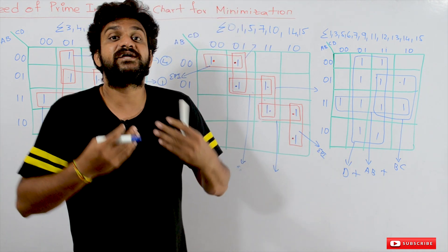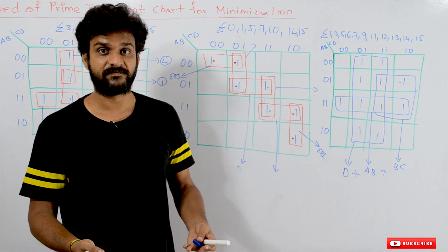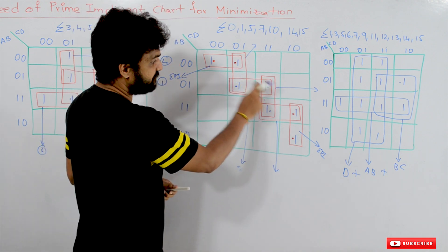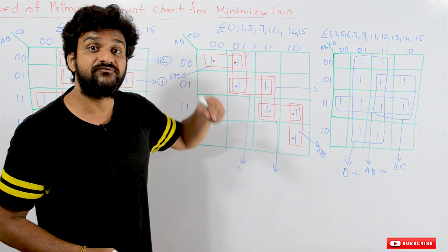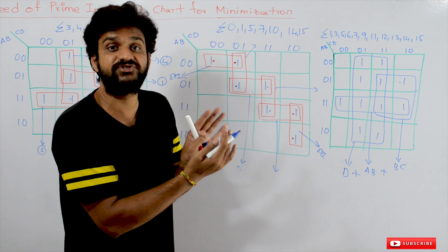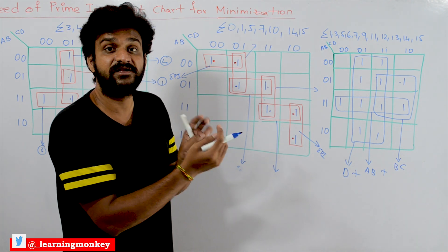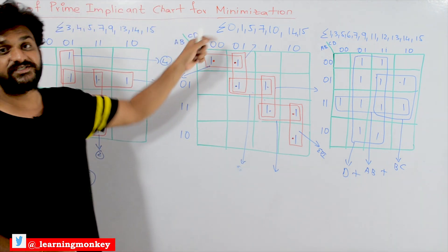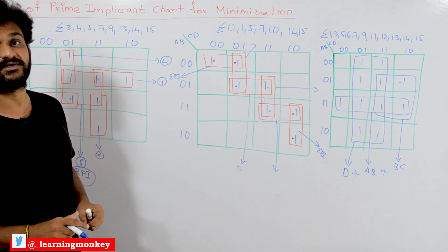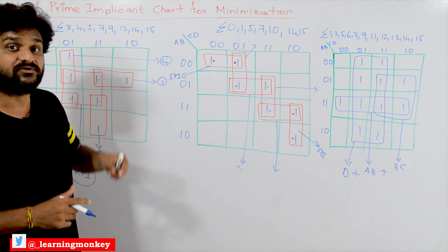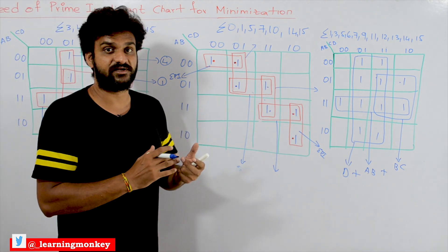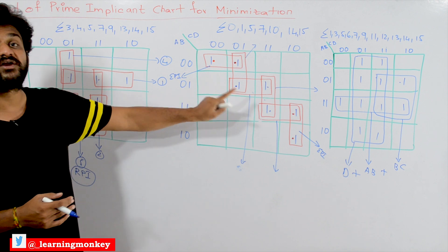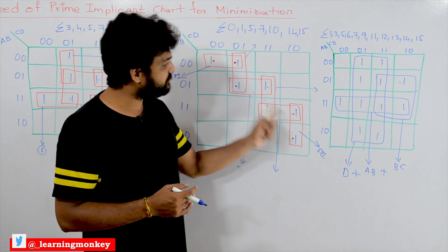In order to identify which prime implicants have to be chosen for minimization from these four options, in order to get the minimal solution, that identification is possible by using a prime implicant chart. By just seeing the K-map, we cannot get the right answer — we may get confused. Multiple minimal solutions are possible and that decision cannot be made by just seeing the K-map.